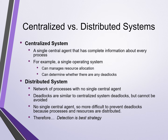Centralized versus distributed systems. In a centralized system, there is a single central agent that has complete information about every process. This type of system can manage resource allocation and easily determine whether there are any deadlocks. In a distributed system, we have a network of computers, each with processes and no single central agent. Deadlocks are similar to centralized system deadlocks, but they cannot be avoided. There is no central agent, so prevention of deadlocks is also difficult due to processes and resources being distributed. Because of this, detection is the best strategy to handle deadlocks in a distributed system.